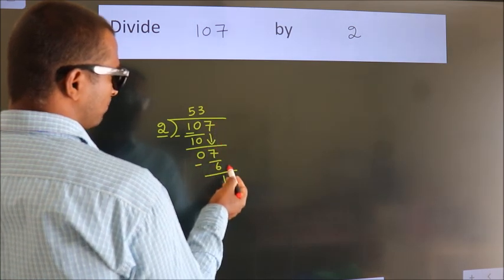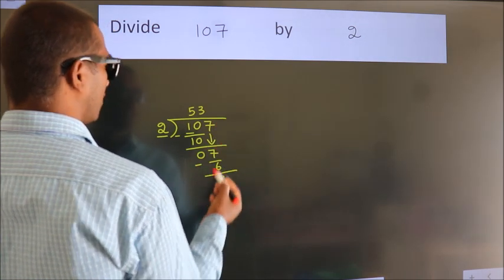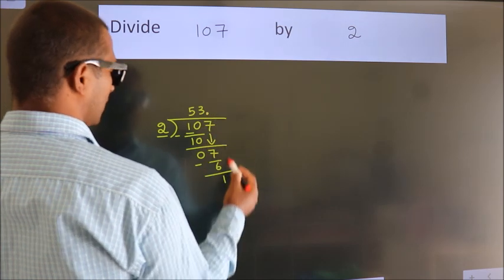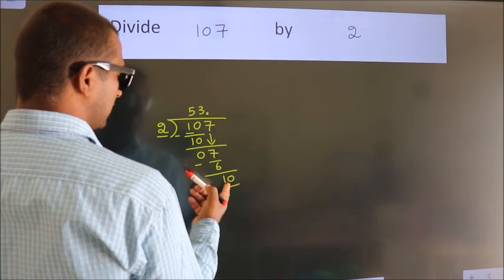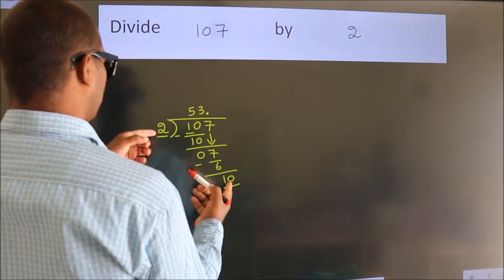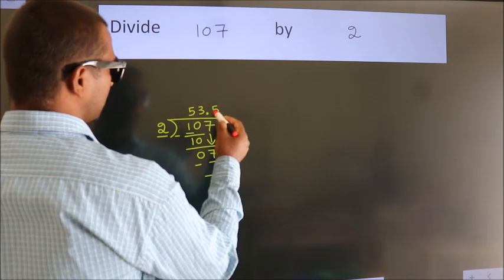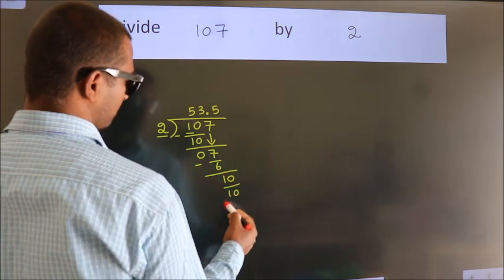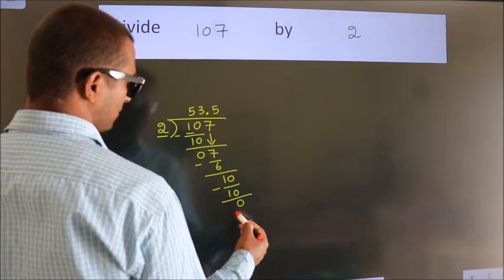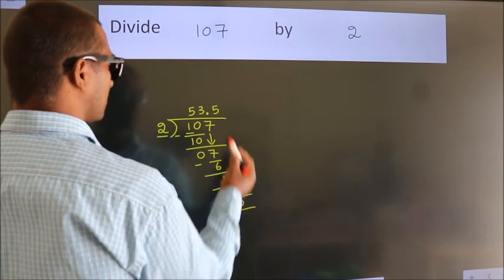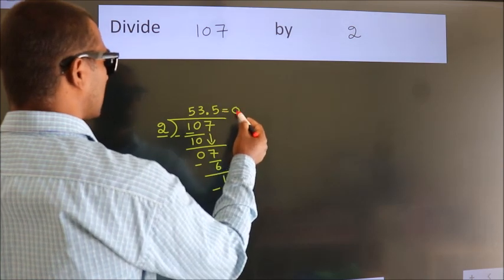no more numbers to bring down. So what we do is put a dot and take 0, giving us 10. When do we get 10 in the 2 table? 2 times 5 is 10. Now we subtract and get 0. We got remainder 0, so this is our quotient.